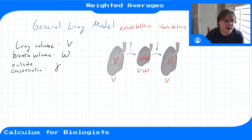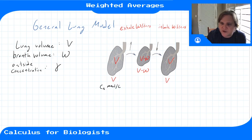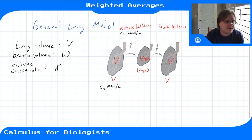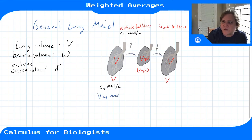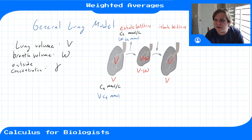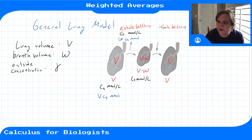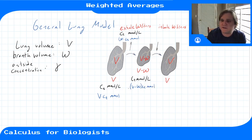Thinking about the concentration of whatever chemical we're interested in: at the original time we have C_T millimoles per liter. The number of moles in the lung before the breath is V times C_T millimoles. In the exhaled breath, we exhale W times C_T millimoles. So at the intermediate step, we still have concentration C_T but the number of moles is V minus W times C_T millimoles — we started with V·C_T and lost W·C_T.